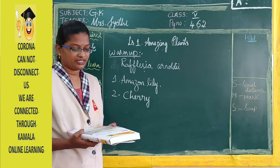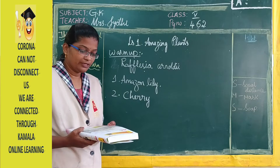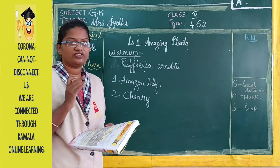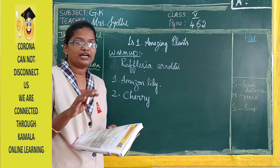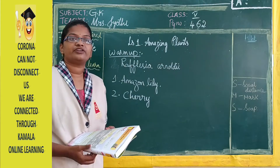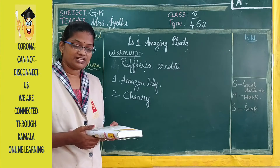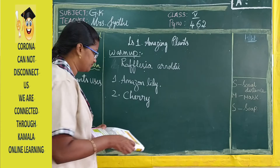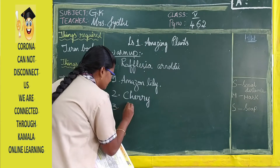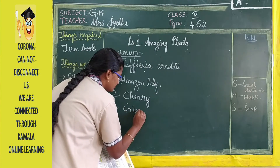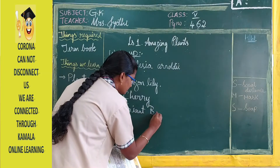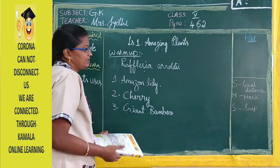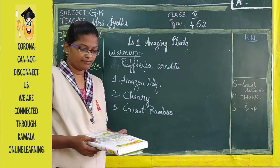The third question: the fastest growing plant in the world. All plants grow, but among them, which plant grows very, very fast? That is Giant Bamboo. It is Giant Bamboo — the fastest growing plant in the world.